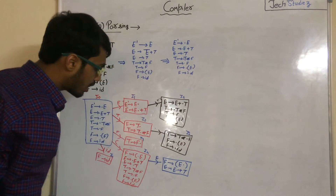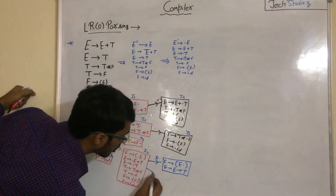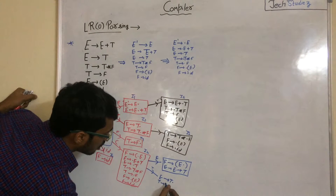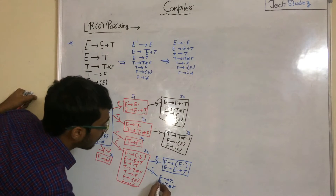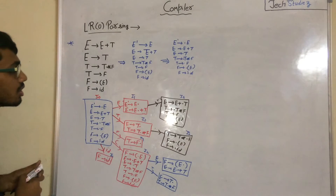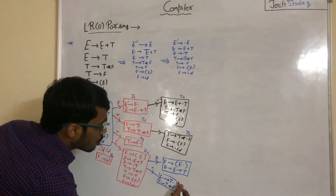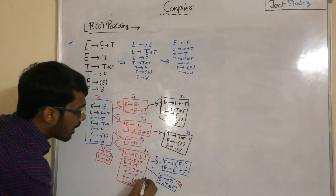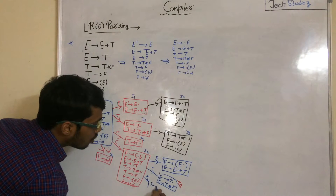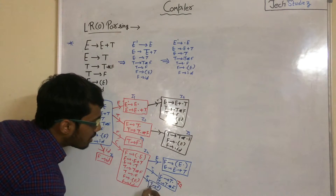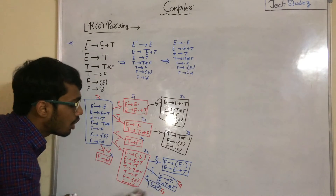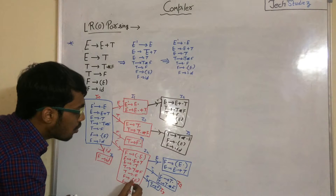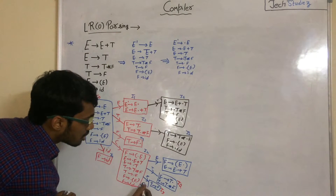If we apply GOTO with T we get E to T· and T to T·star F — this production is the same as I2, so this is I2, not a new state. If we apply GOTO with F we get T to F·, which is the same as I3. So need not to add again.